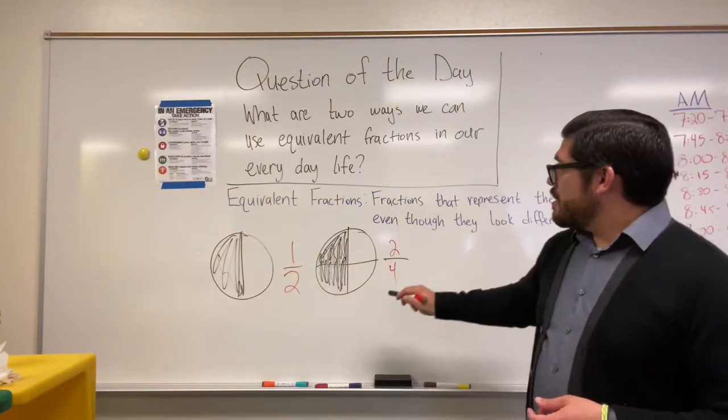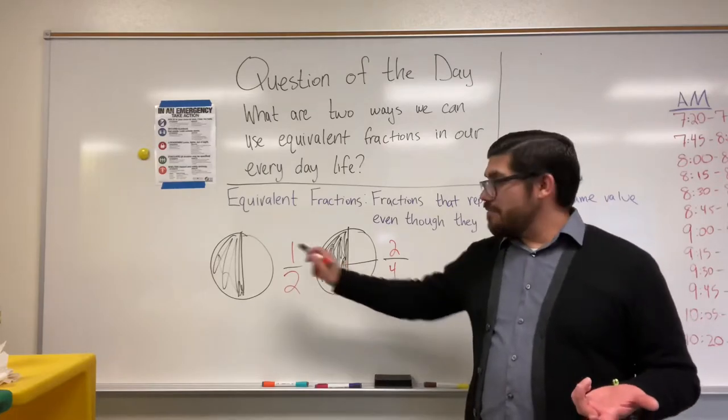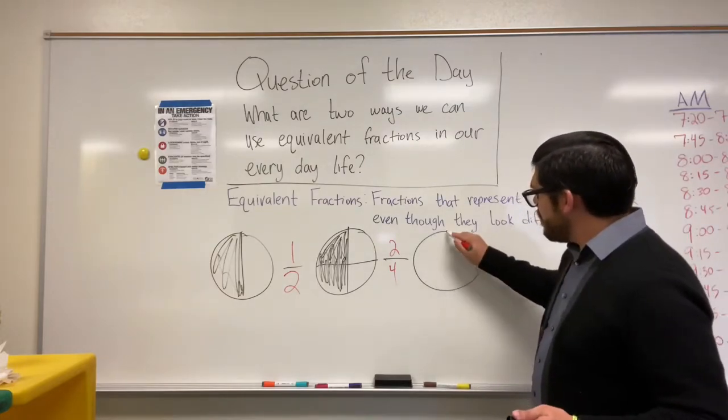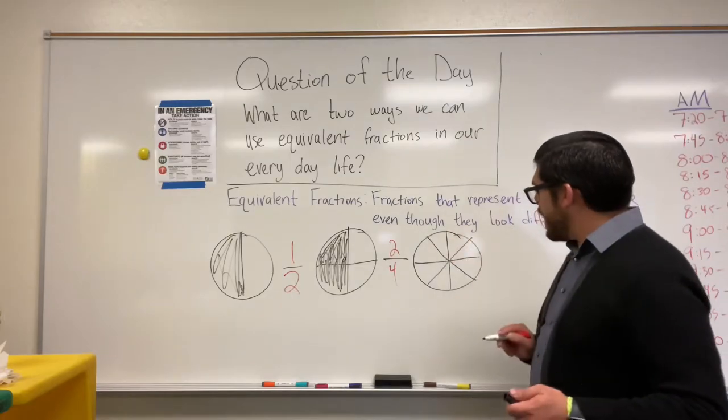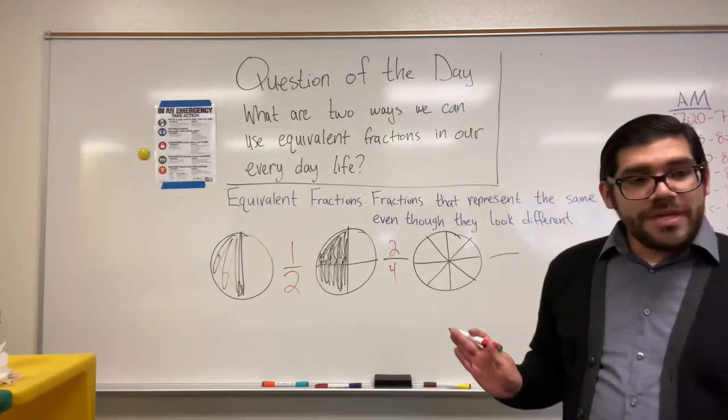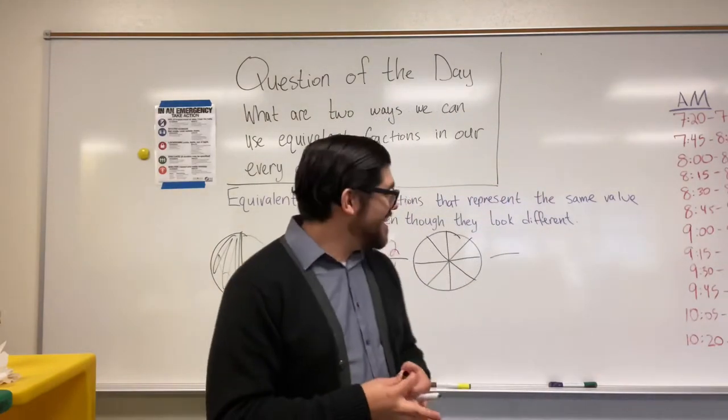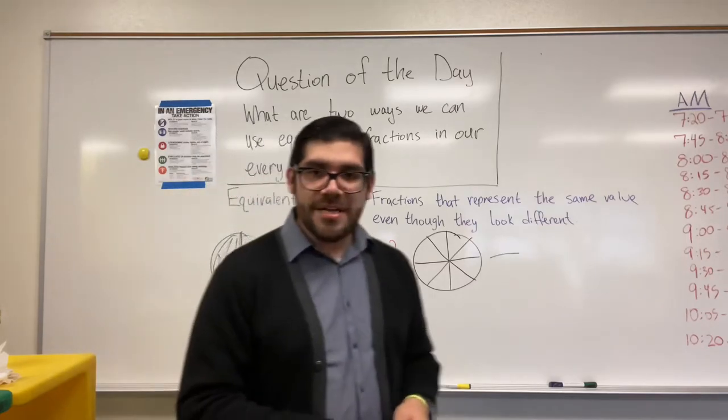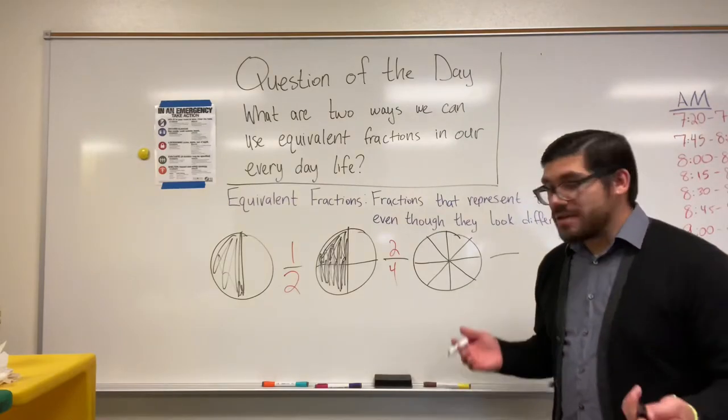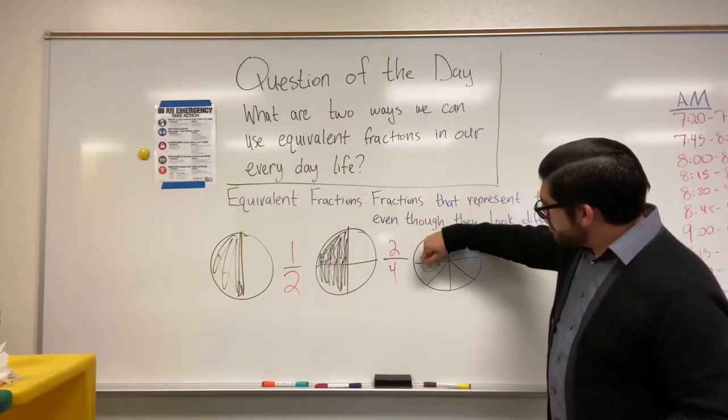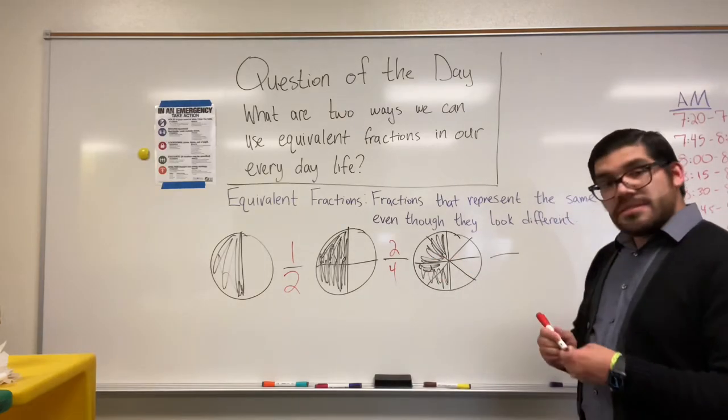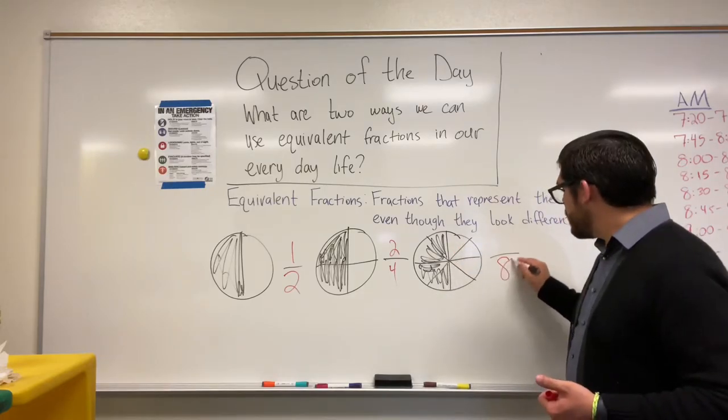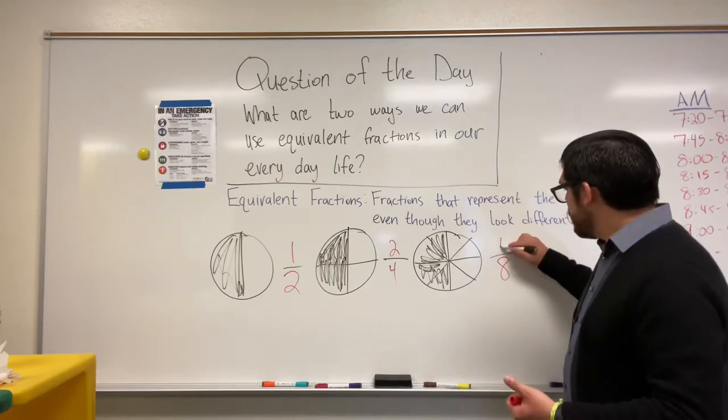Alright. So these fractions here, they look different, but they represent the same value. So just to give you one more example of this, let's take it one step further. We're going to divide our cookie into eight pieces because we're weirdos like that. And we want to divide a single cookie into eight pieces. So how many of those pieces do I need to give my friend in order for it to still be an even trade? Yes, that's right. Four. And that means that our denominator is what? How many pieces is this total? Eight. Good. And we each got how many? Four. That's right.